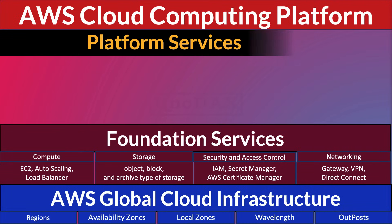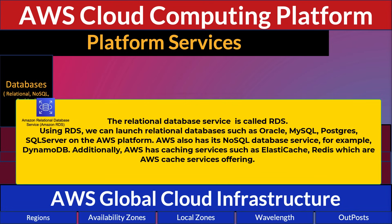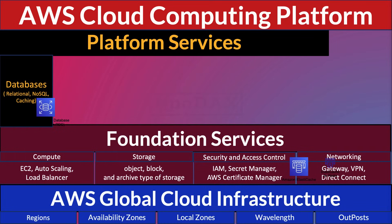Next, we have platform services that leverage AWS global cloud infrastructure and foundation services. Under the database category, AWS has RDS — Relational Database Service — which can launch relational databases such as Oracle, MySQL, PostgreSQL, and SQL Server on the AWS platform. AWS also has a NoSQL database service called DynamoDB, and caching services such as ElastiCache and Redis.